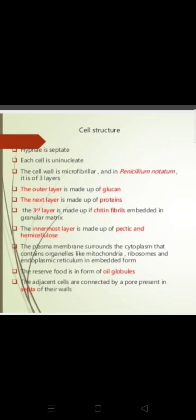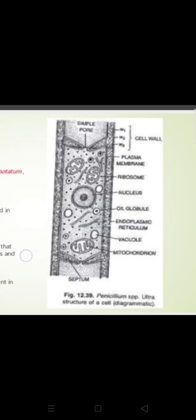The cell wall is made up of different components as seen in the layering. In the cell structure diagram, the plasma membrane is shown, and inside the cytoplasm the contents include ribosomes, nucleus, oil globules, endoplasmic reticulum, vacuole, and mitochondria. Different layers of the cell wall are also shown, completing the cell structure of Penicillium.